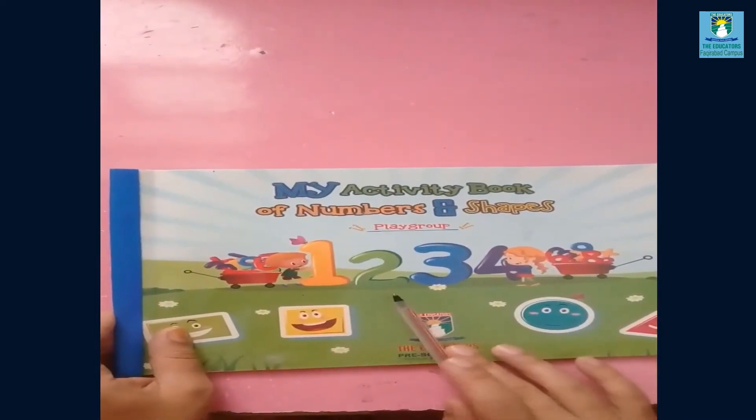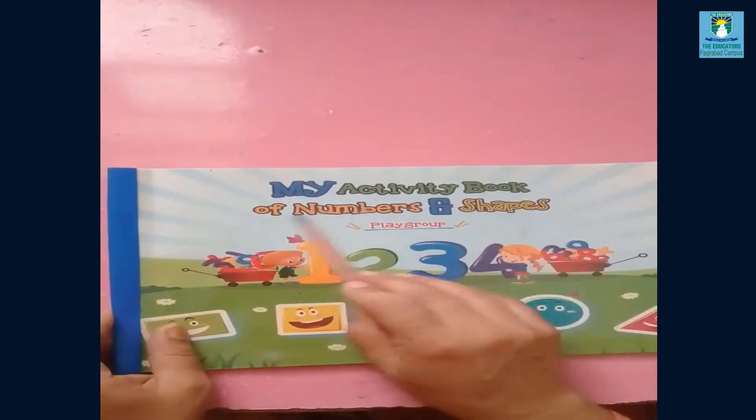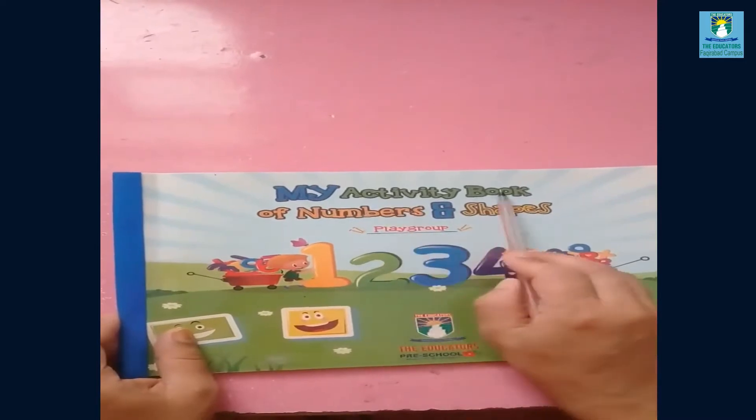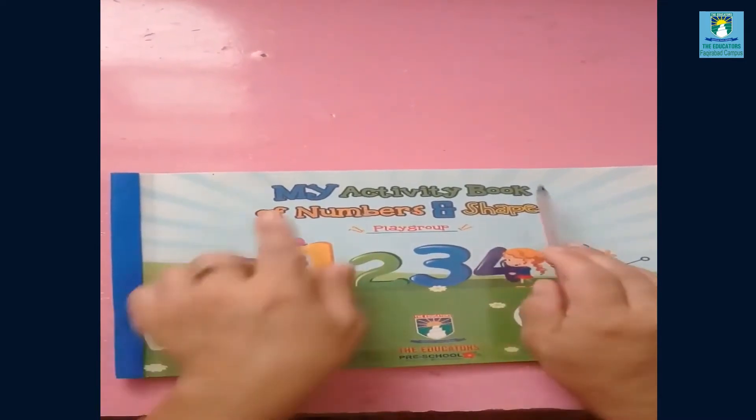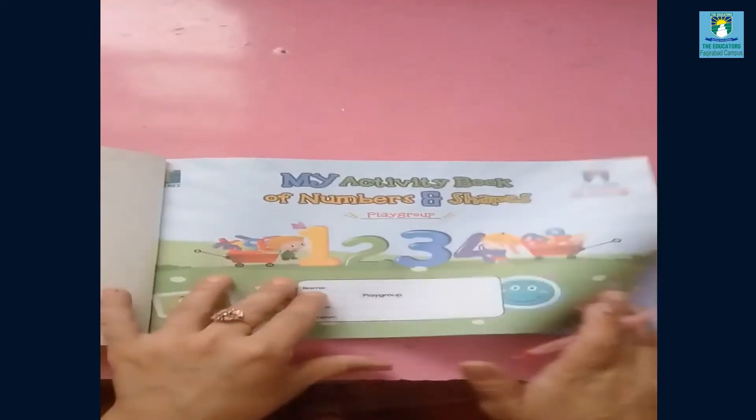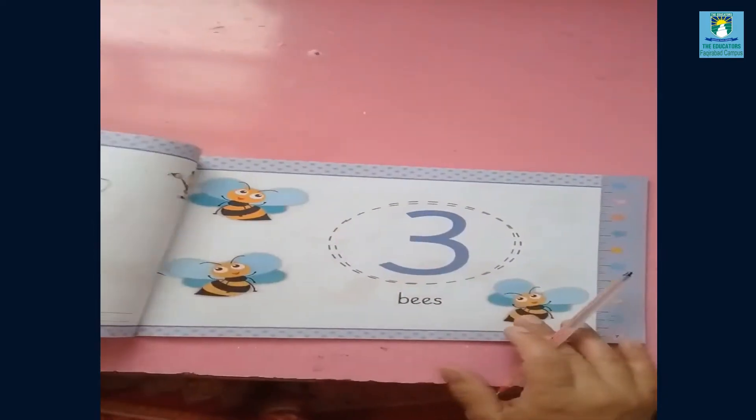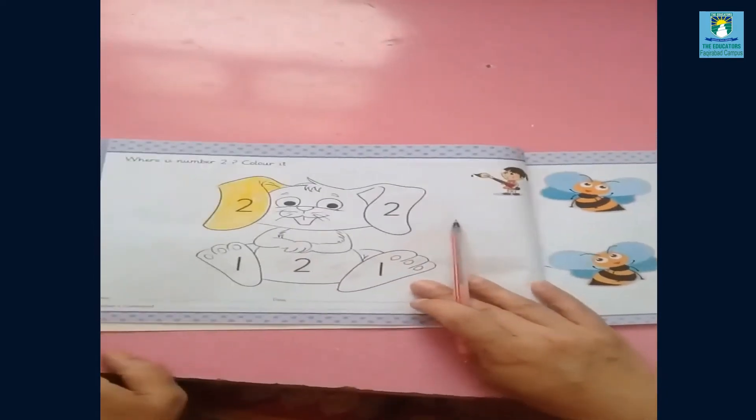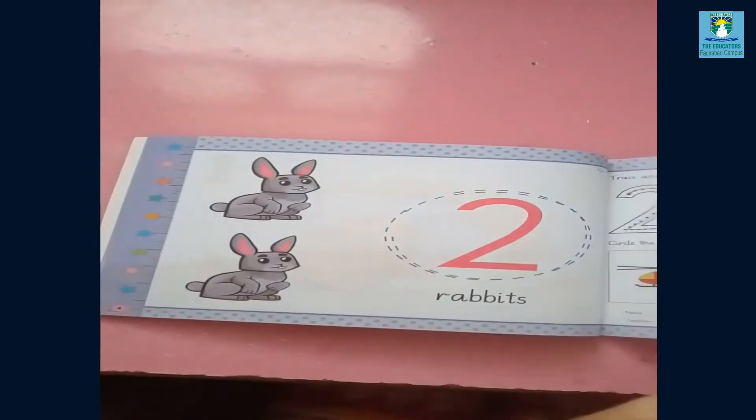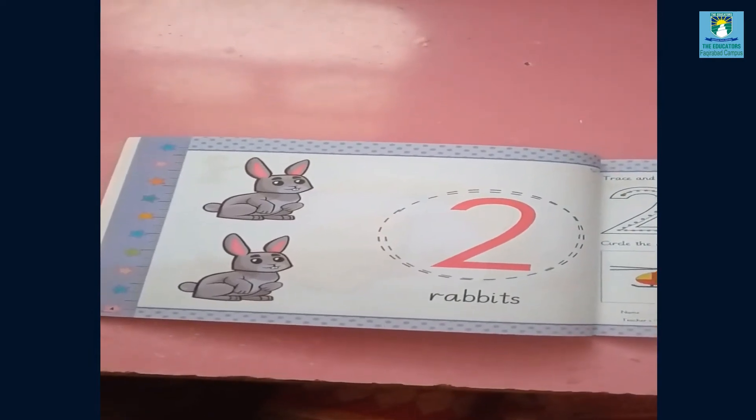The name of this book is My Activity Book of Numbers and Shape. Again, read: My Activity Book of Numbers and Shape. This is your book, so please take out this book and open the page number six.